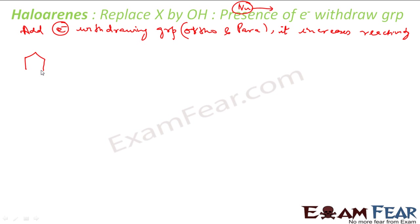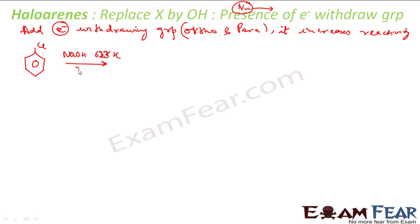For example, if I have this particular compound with a chlorine — chlorobenzene — we add NaOH at 623 Kelvin and 300 atmospheric pressure, it will form phenol. This is the reaction we have seen — very drastic conditions.